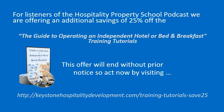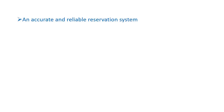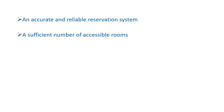Hospitality properties should ensure they have all the required elements necessary in an accessible property. Here are tips on what to look for: an accurate and reliable reservation system to provide persons with disabilities the ability to reserve a room with accessible amenities, and a sufficient number of accessible rooms, including rooms with communication features.